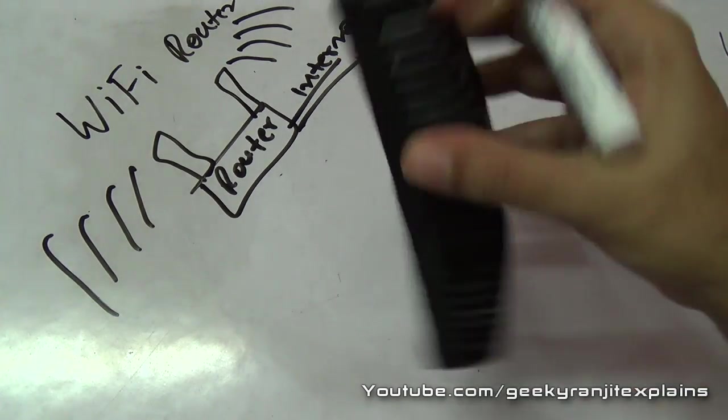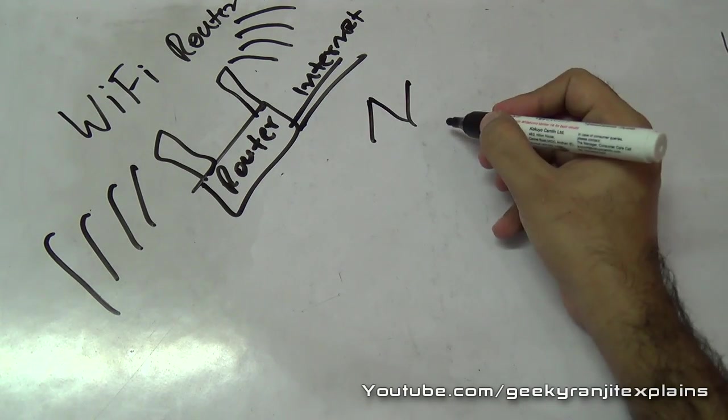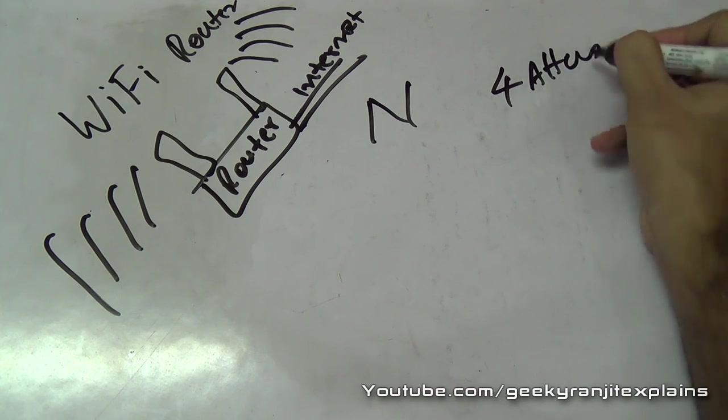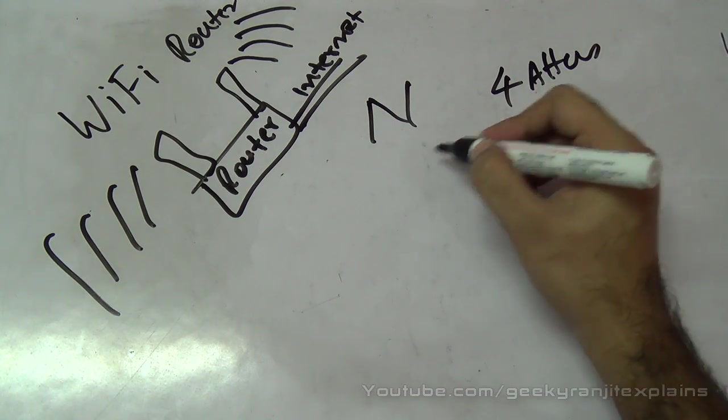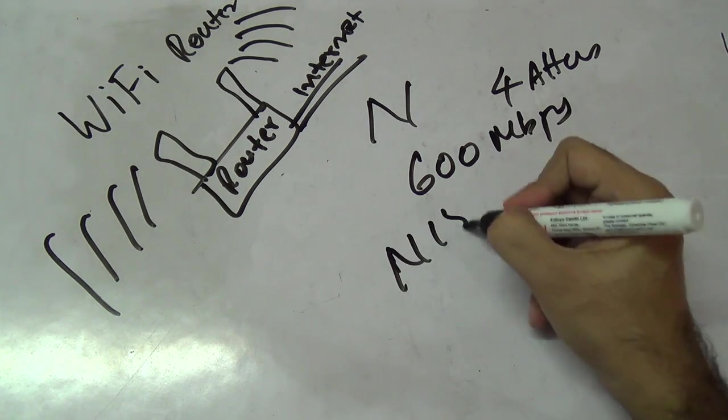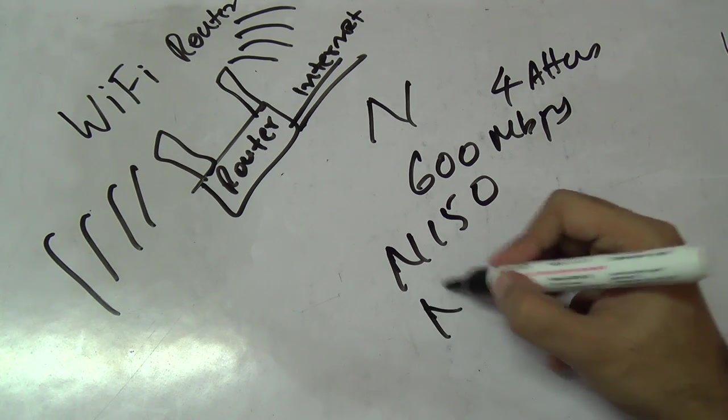Every Wi-Fi router has an antenna. With the n-based standard, we can have multiple antennas. N actually supports up to a max of four antennas, so the maximum theoretical speed we can get with the n standard is 600 megabits per second.